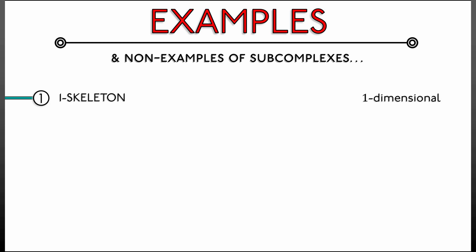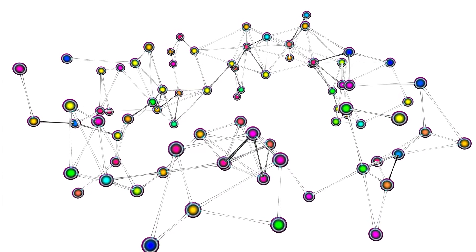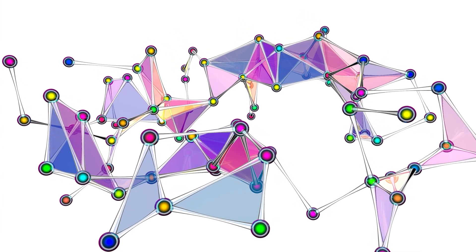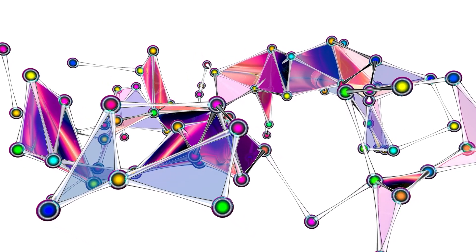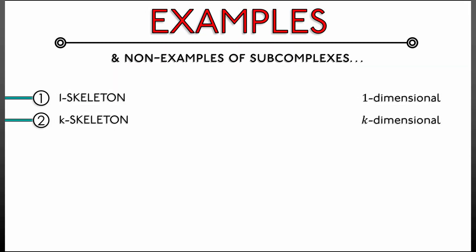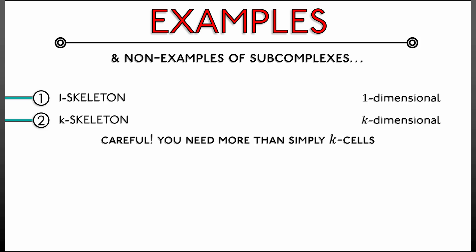Since the one-skeleton is just a graph, it is one-dimensional, as you might guess. We can keep going and talk about the two-skeleton, the three-skeleton. The k-skeleton of a complex consists of all the simplices of dimension k or below. You take all the vertices, all the edges, all the two-simplices, and keep going up to and including all simplices of dimension k. Be careful: the k-skeleton is not just the k-simplices — you must include everything of dimension k or below.